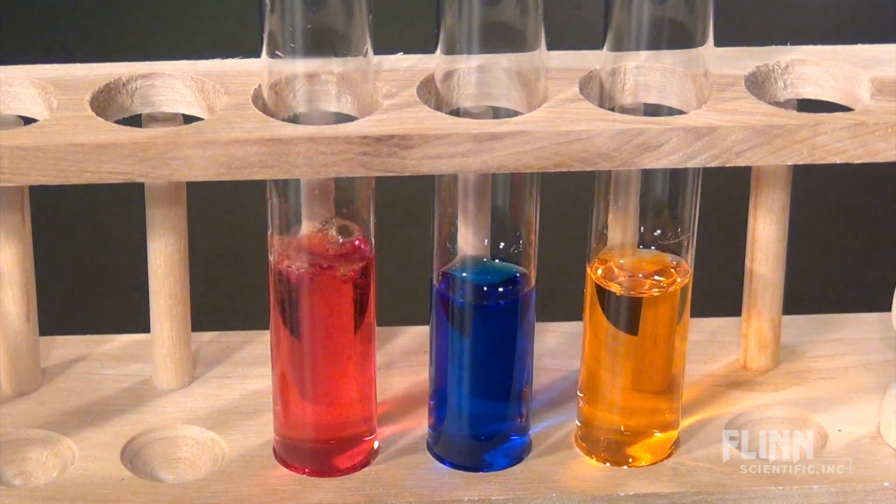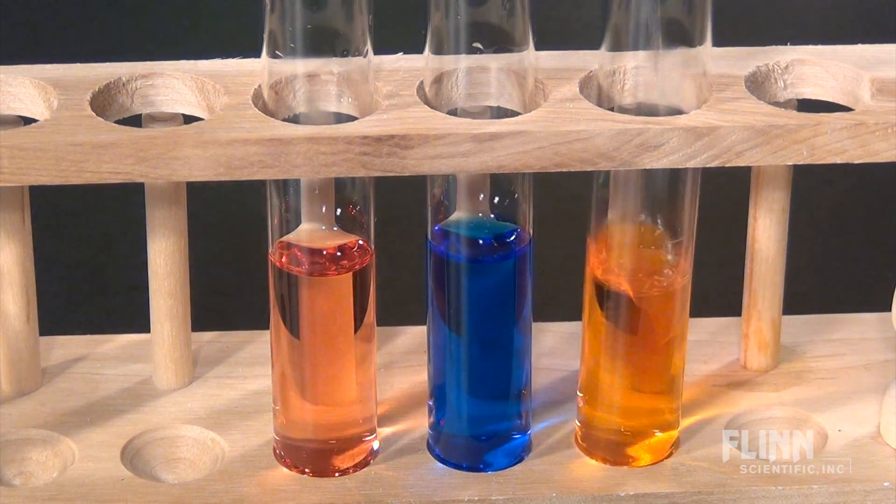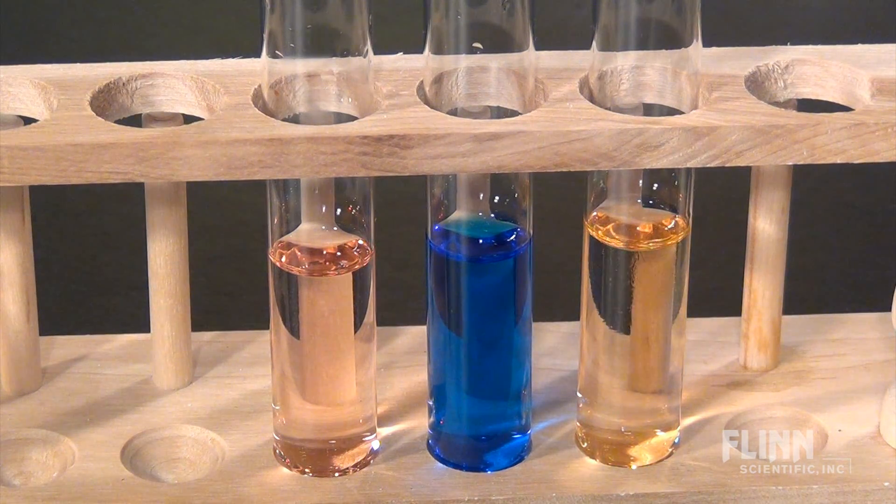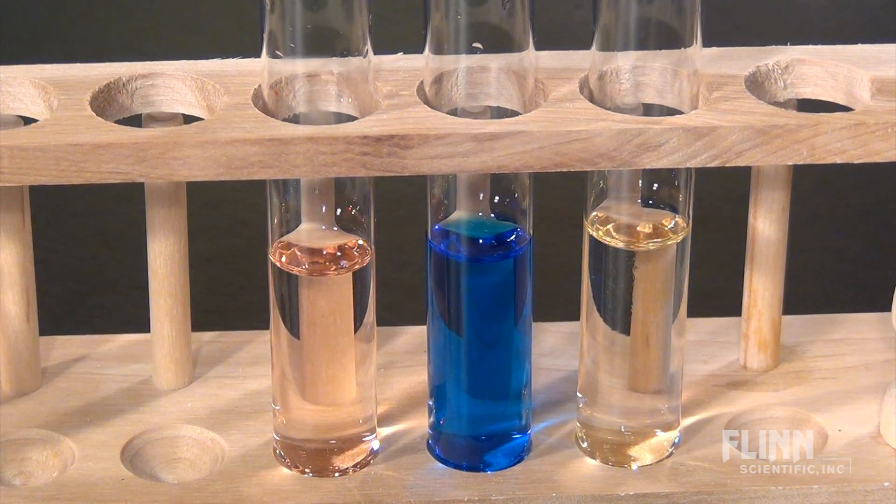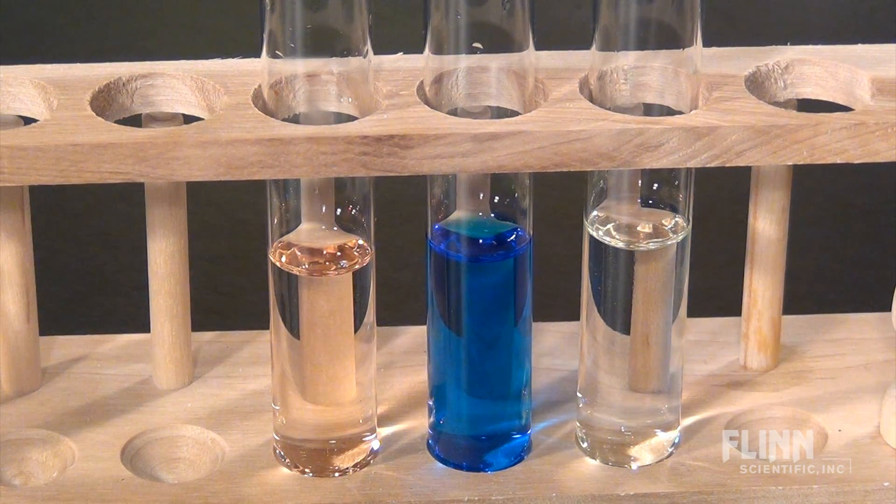Teach kinetics by bleaching food dyes with sodium hypochlorite. Students can adjust the concentrations of the food dye and bleach to determine which has a greater effect on the rate of fading. This can be done as a qualitative lab or used with a spectrophotometer to collect absorbance values for later analysis.